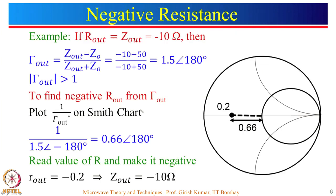Let us take a simple example to understand negative resistance. If R_out, which equals Z_out, is equal to −10 ohm, we can find gamma_out as (Z_out − Z_0) divided by (Z_out + Z_0). Substituting Z_out = −10 and Z_0 = 50: (−10 − 50) divided by (−10 + 50) gives −60 divided by 40, which equals 1.5 angle 180 degrees. So the magnitude of gamma_out is greater than 1. You can take any value of Z_out with a negative R value and, regardless of the reactance, gamma_out will always be greater than 1.